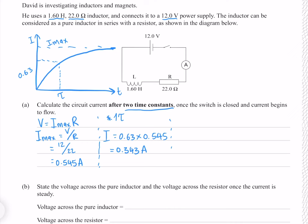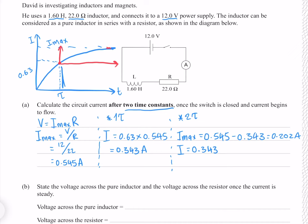For two time constants, we now start at 0.343 amps and approach the maximum of 0.545 amps, so the effective I_max for this second interval is 0.545 minus 0.343, which equals 0.202 amps. The new current is the starting value of 0.343 amps plus 63% of this 0.202 amp increase, giving 0.470 amps.